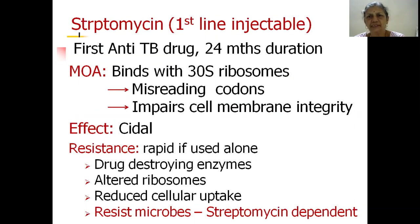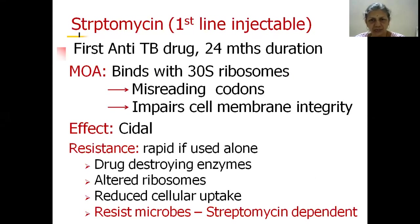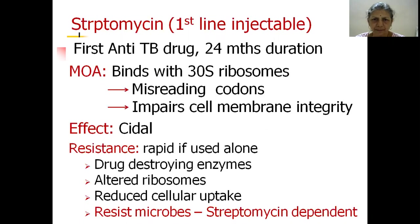Let's start with streptomycin, the first-line injectable drug. The other four of the five drugs are oral agents. Streptomycin is the first anti-TB drug and because of its limitations it had to be given for 24 months at a stretch. The mechanism of action is that it binds with 30S ribosomes — the protein synthesis unit — causes misreading of codons on the messenger RNA, and the altered proteins synthesized result in impairment of cell membrane integrity. Like all other aminoglycosides, it is bactericidal.